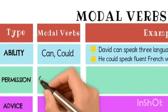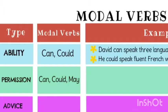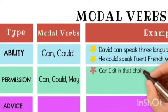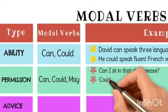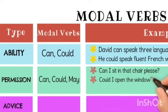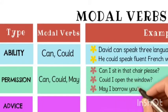Next, to show permission, we use can, could, and may. Examples: Can I sit in that chair, please? Similarly, could I open the window, please?